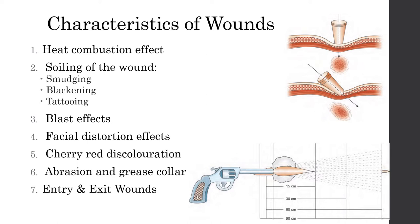When a firearm fires a bullet, various effects occur at the wound. The heat combustion effect is the flame emerging from the muzzle, responsible for producing heat with high-temperature gases, usually seen on garments. This produces an ironing effect — the garment region becomes flattened as if ironed. A melting effect is caused to synthetic cloths, while a burning effect is caused to natural fabrics like cotton or wool.